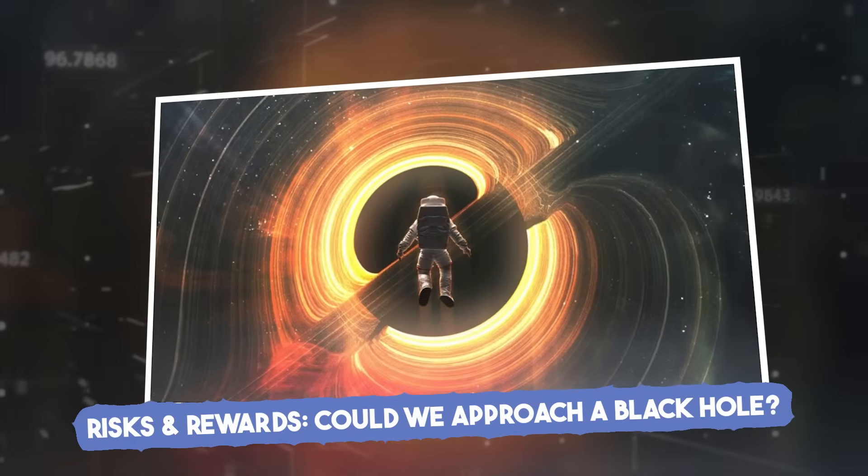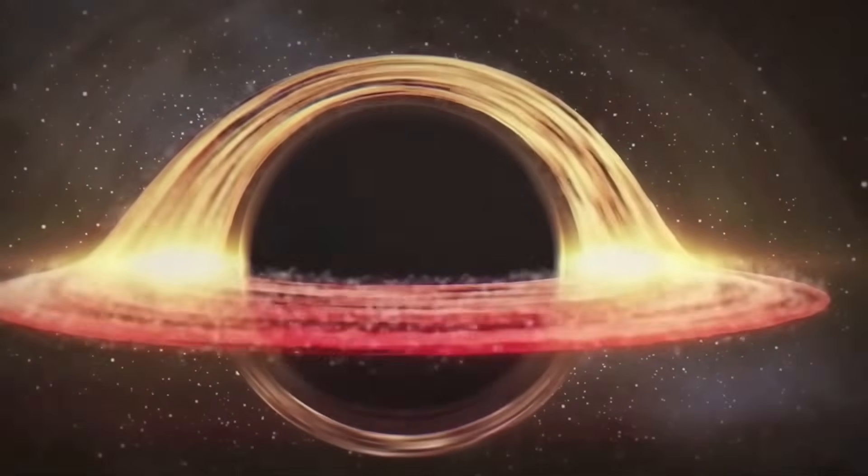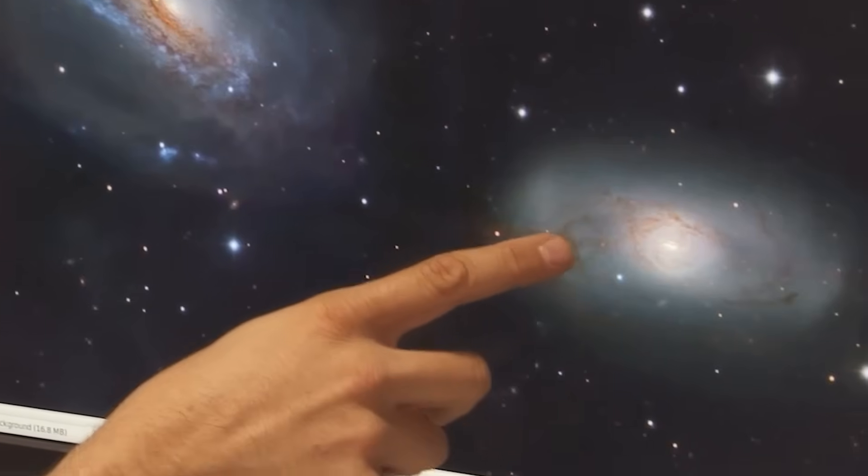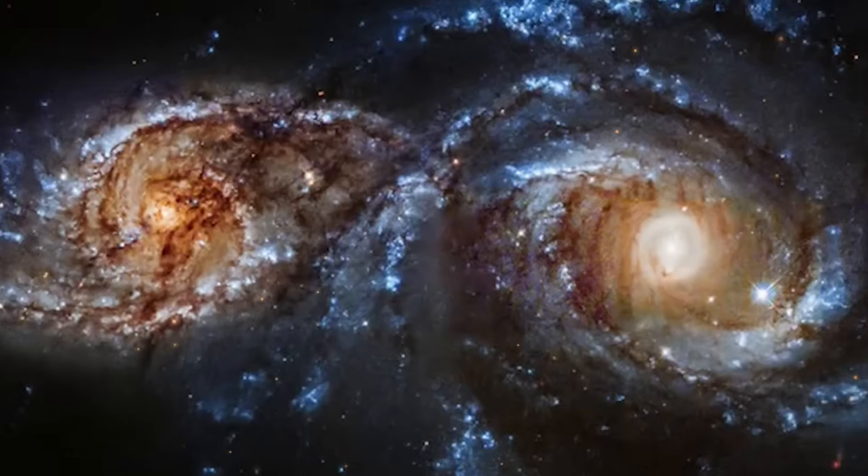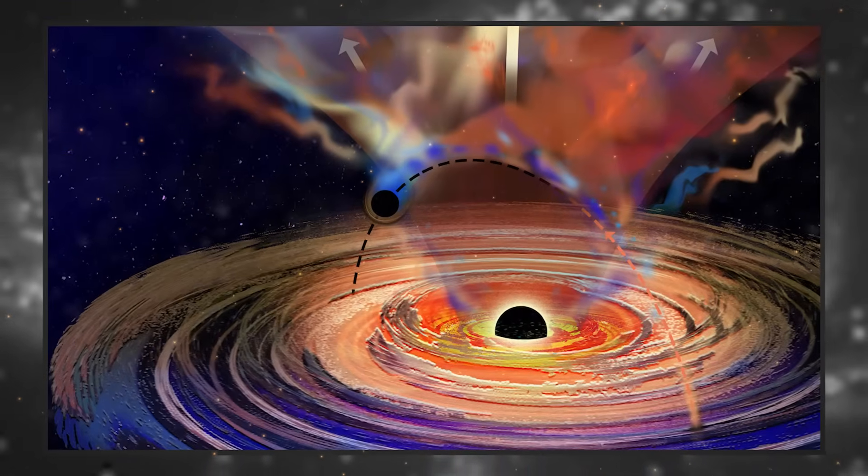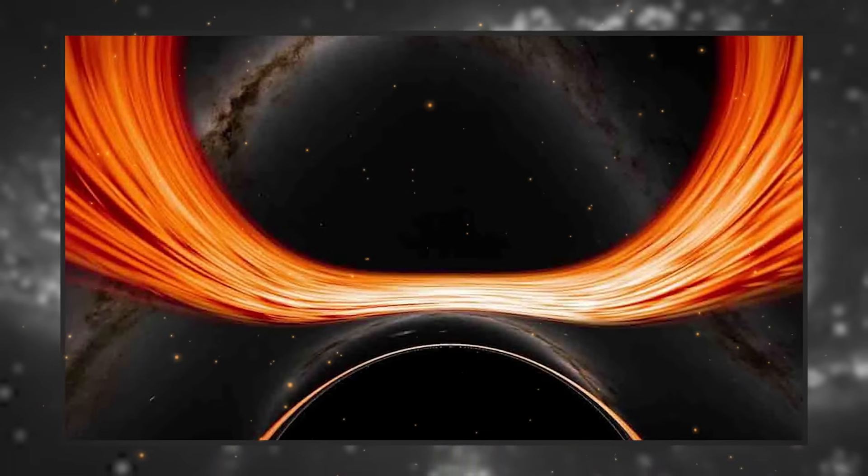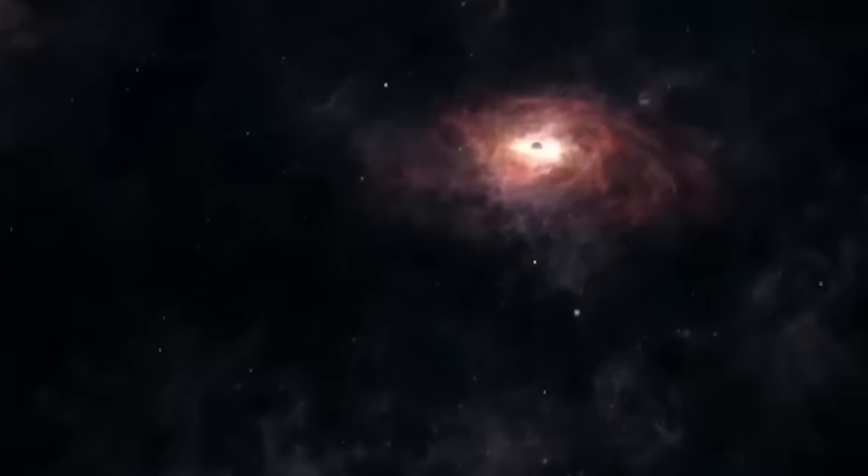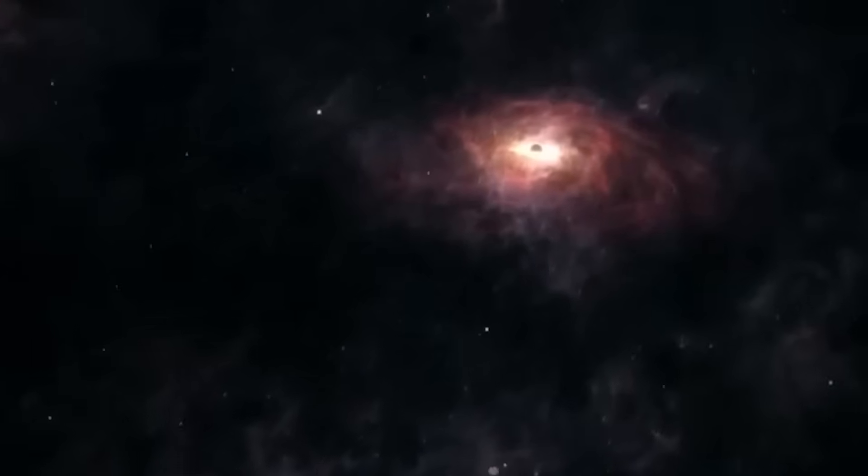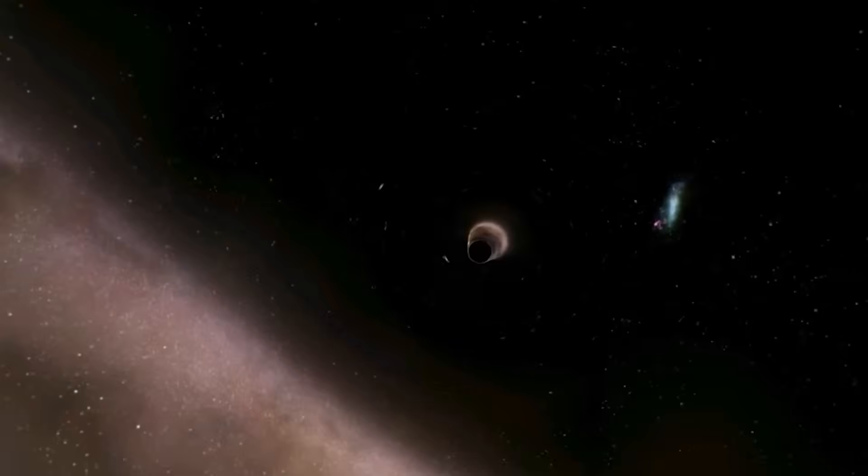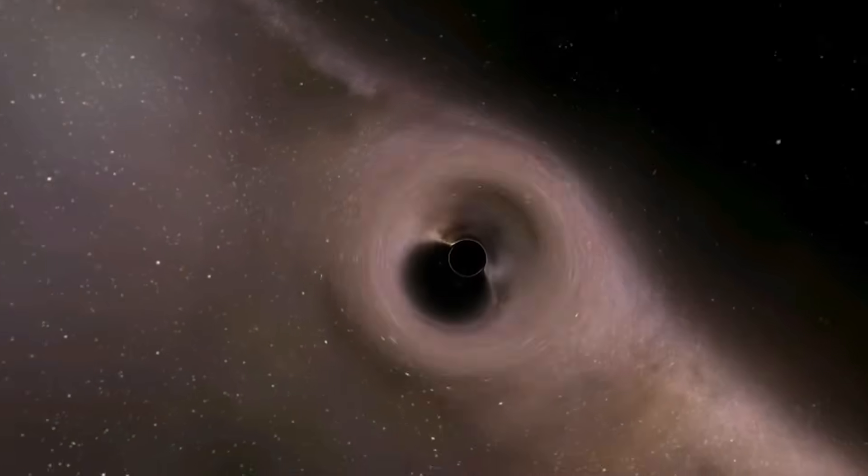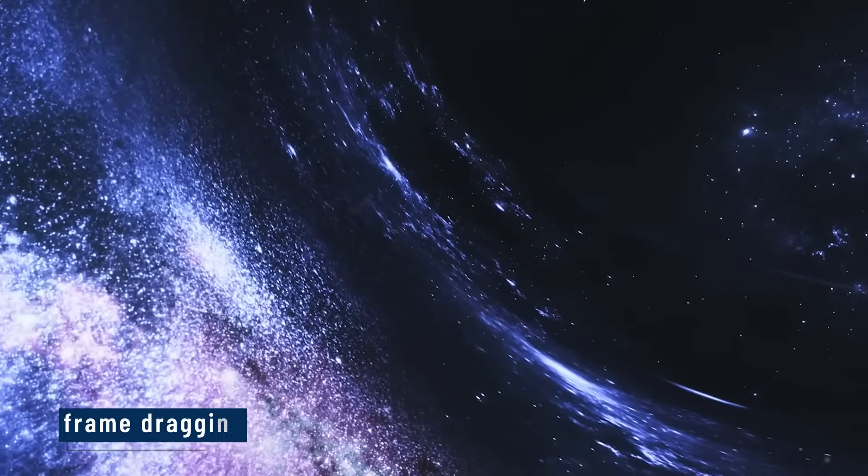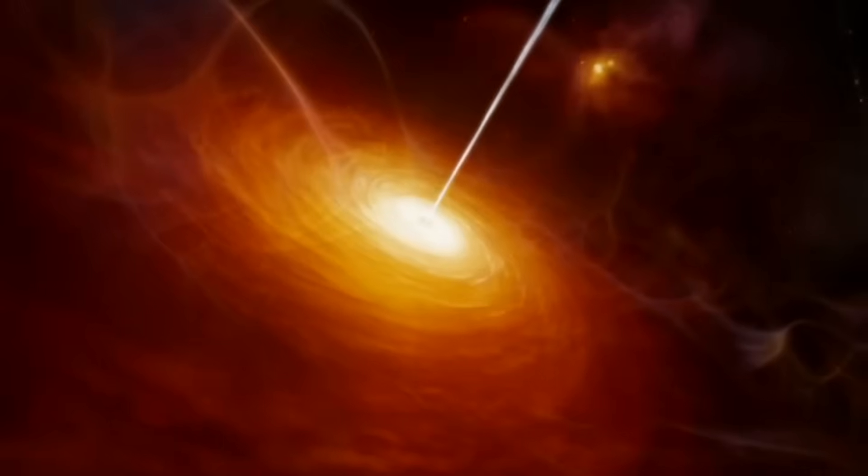Risks and rewards. Could we approach a black hole? People often ask, what happens if we go near a black hole? The answer is fascinating and terrifying. As you get close to the event horizon, gravity becomes stronger. The closer side of your body is pulled harder than the far side. This effect is called spaghettification. You'd be stretched like a noodle. Even without going in, strange effects happen. The black hole's spin drags space around it, twisting your view of time and direction. This is frame dragging, and it's been observed around spinning black holes.